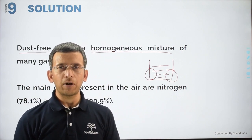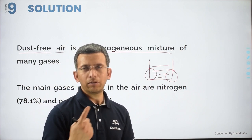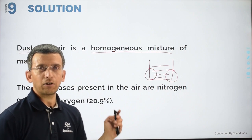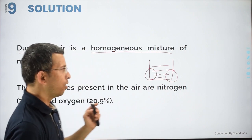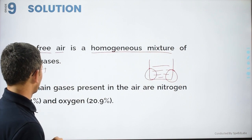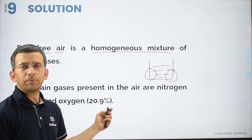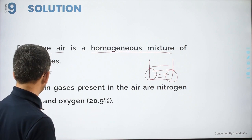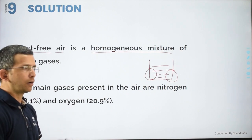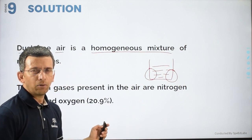When dust particles are added, the air becomes heterogeneous because it now has both a solid phase from the dust particles and a gaseous phase from the mixture of gases. So dust-free air is always a homogeneous mixture of gases. Air contains nitrogen at 78% and oxygen at 20.9%.